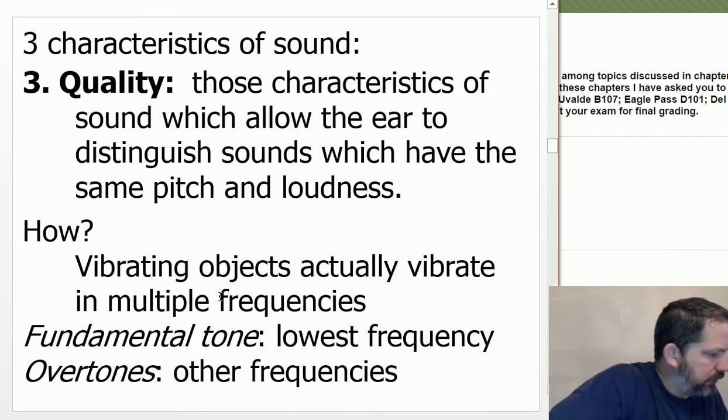Intensity related to loudness or softness. Whispering is about 20 decibels. Sound quality. Vibrating objects vibrate in multiple frequencies, the lowest of which is called the fundamental tone while the others are called overtones. So my voice - that's multiple frequencies at once. The lowest one is the fundamental tone and then there are overtones.